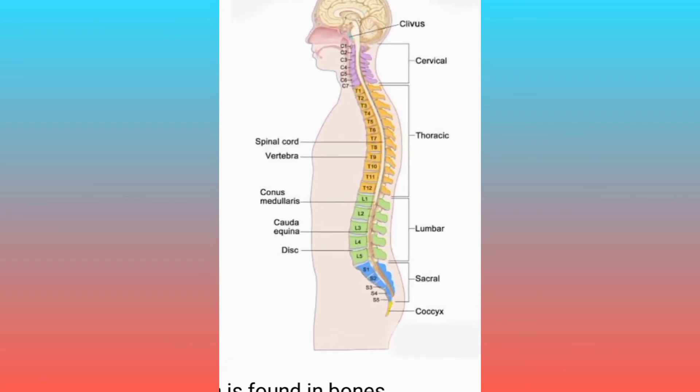Friends, you can see here the diagram showing the cervical, thoracic, lumbar, sacral, and coccyx regions of the spinal cord, along with the vertebrae, spinal cord, medulla, cauda equina, and intervertebral discs.